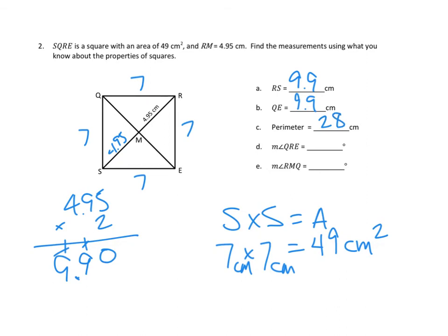Next, what is angle QRE? That's this angle right here. I know that in a square, the angles at the corners are all right angles, and a right angle is 90 degrees. So angle QRE must be a right angle — 90 degrees.